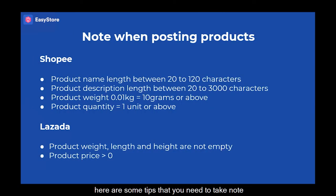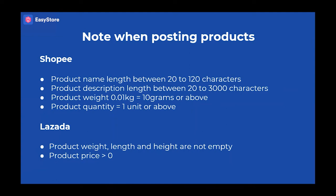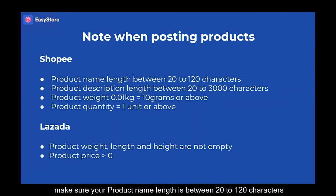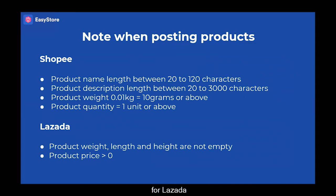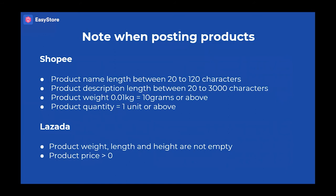Here are some tips you need to take note when posting products to Shopee and Lazada. For Shopee, make sure your product name length is between 20 to 120 characters, product description length is between 20 to 3000 characters, product weight is 0.01 kg (10 grams) or above, and product quantity is 1 unit or above. For Lazada, make sure the product width, length and height are not empty, and product price is greater than 0.